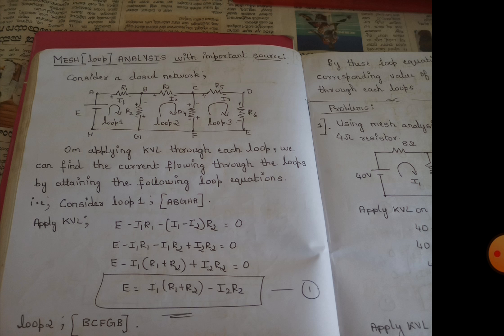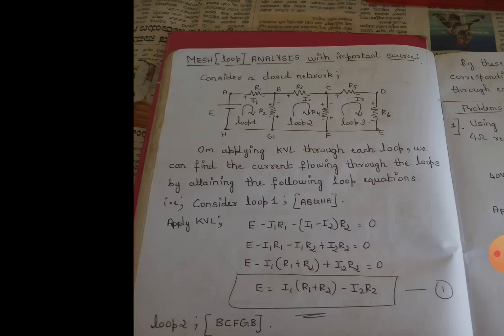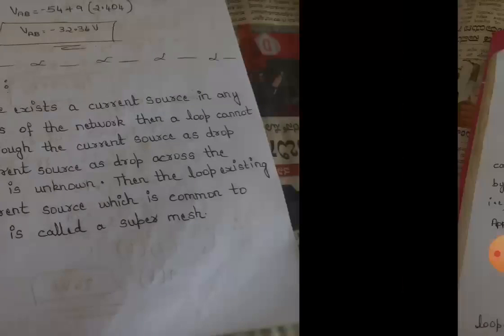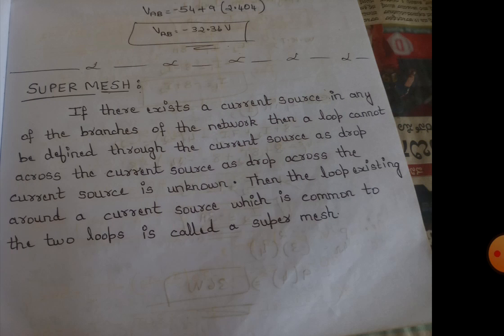You can pause the video and refer to the steps here. In mesh analysis, our goal is to calculate the currents using KVL. There is one more concept called super mesh — super mesh is whenever there is a current source attached between two meshes.